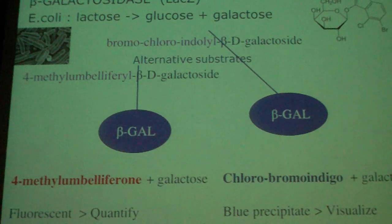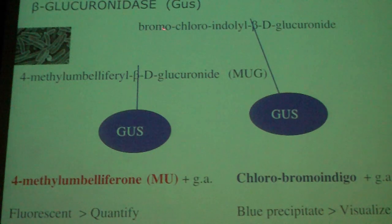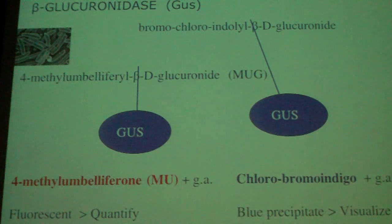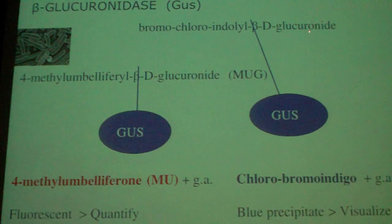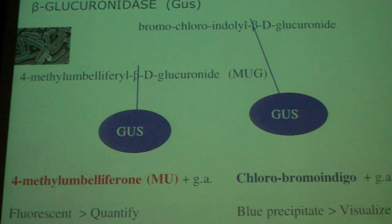The other reporter is beta-glucuronidase, or GUS. It works on exactly the same principle as beta-galactosidase, except that it recognizes a beta-D-glucuronide bond instead of a beta-D-glucoside bond.